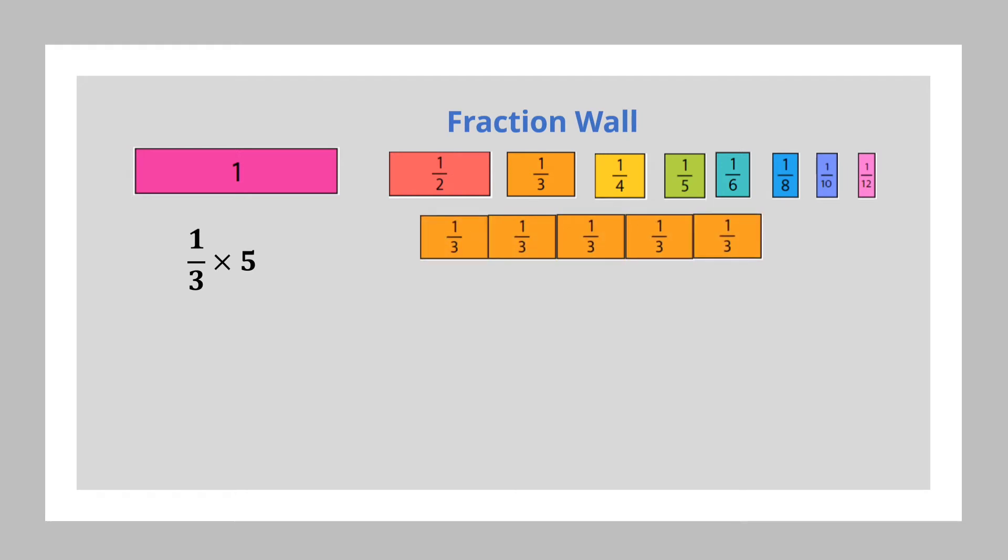So when we have five tiles that are one-third tiles, we will have a total of five thirds. We can change this five thirds into a mixed number by using the same fraction tile.